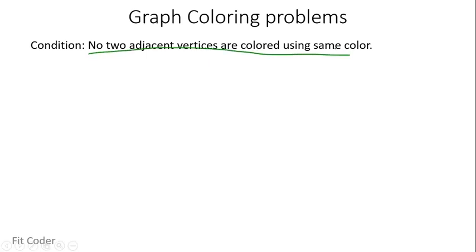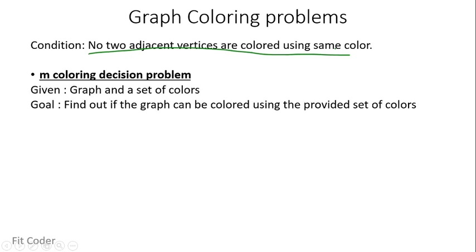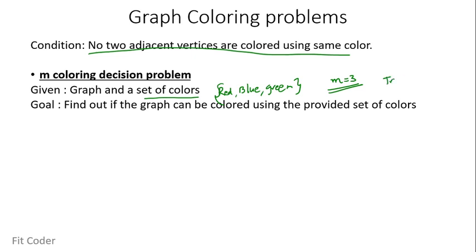The first category is the M coloring decision problem. In these types of problems, we could be given a set of colors or a value of M. If M is equal to 3, it implies we have three colors, and we have to check whether the graph can be colored with three colors or not. The return value will be a boolean, either true or false.